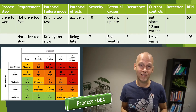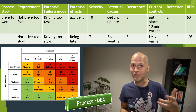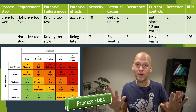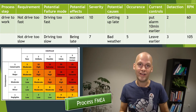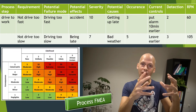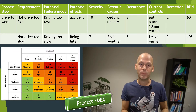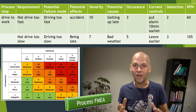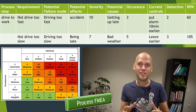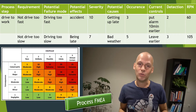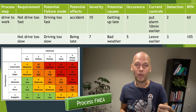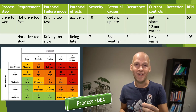It could be a business process, a service process, a production process — it could be any process you want to analyze. The idea behind it is that you analyze your process by giving it a risk number so that you can see where in the process the highest risk is. We call it the risk priority number.